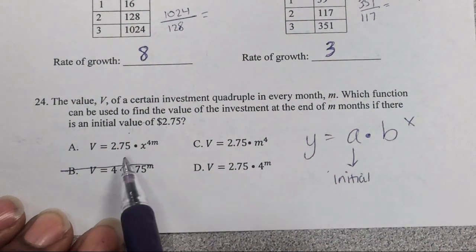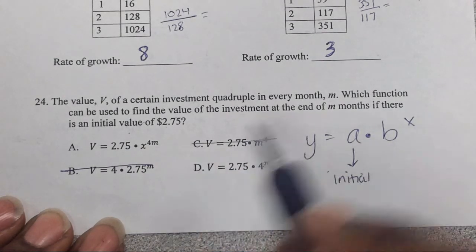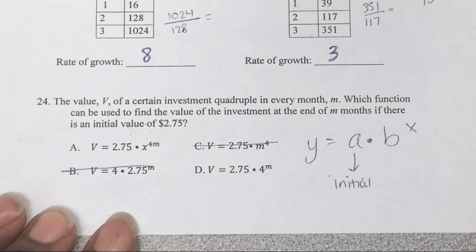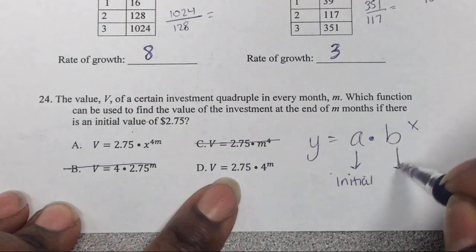So once again setting up the equation: initial value, that should be at 2.75, which means 275 should not have a power on it. So it's going to be one of these and we need to make sure the power is actually the variable.